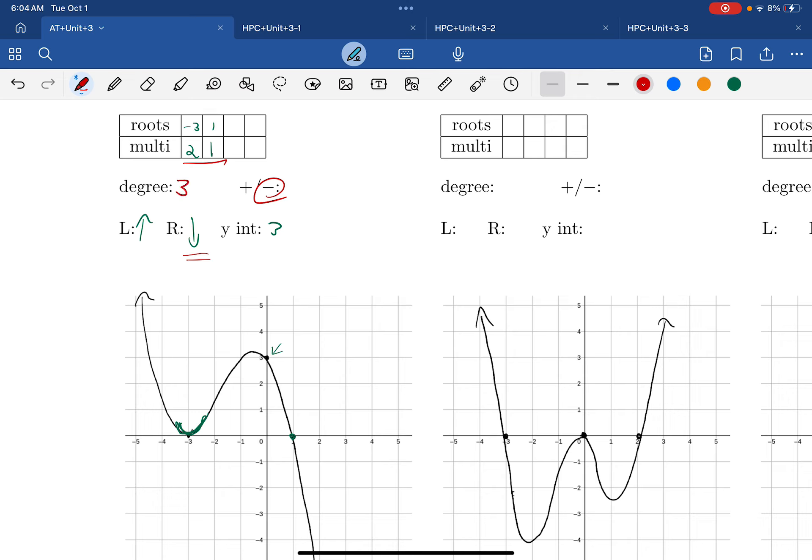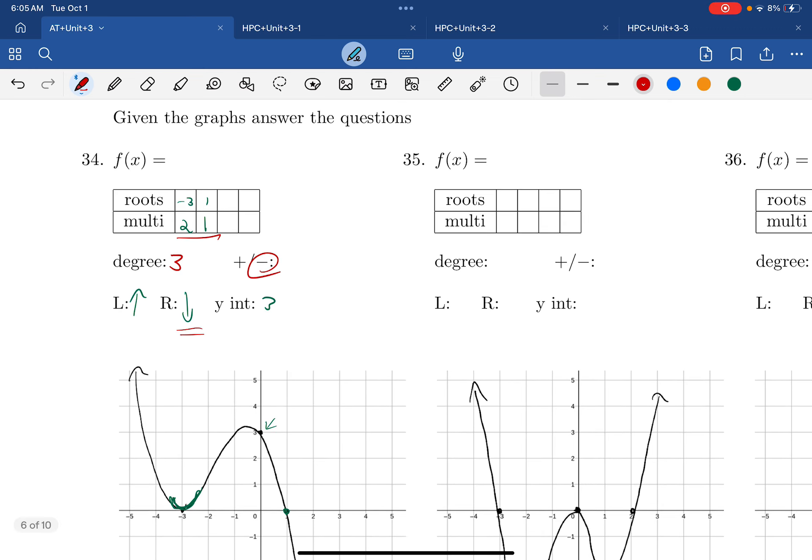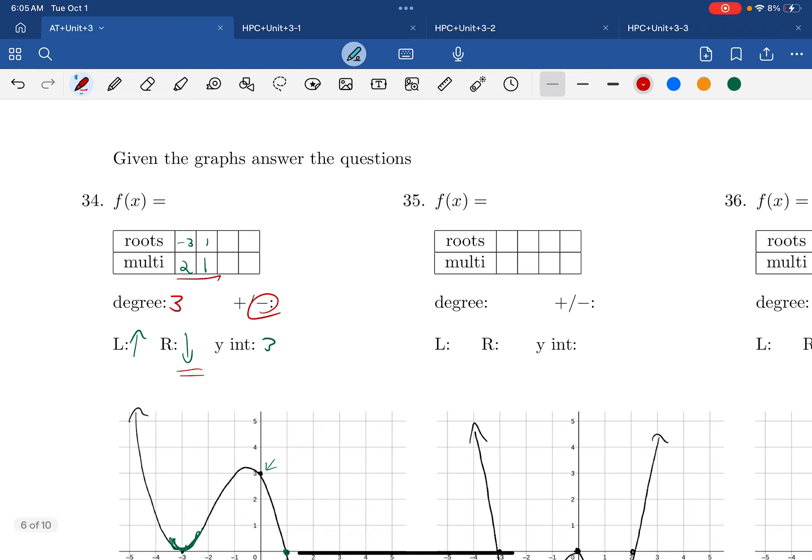Alright, so we're going pretty well here. The function I want is going to be in factored form. So the first portion is pretty easy. Now, the only thing that we don't know yet, and we'll have to figure out, is what coefficient, what number goes out in front. So we're going to leave that portion empty. But the rest of it is pretty easy. The roots of negative three mean we're going to get x plus three, multiplicity two. Root of one, x minus one, multiplicity of one, so just leave it there.